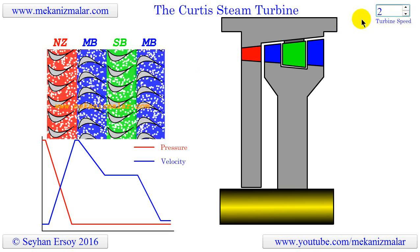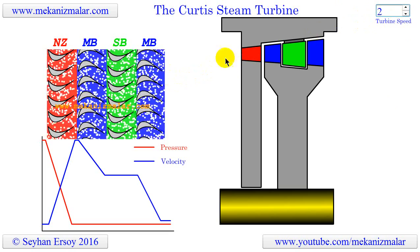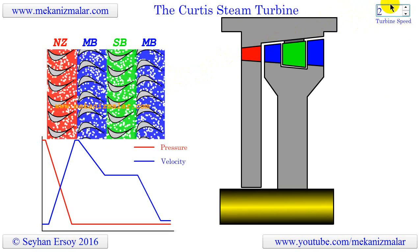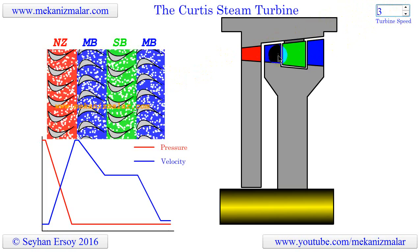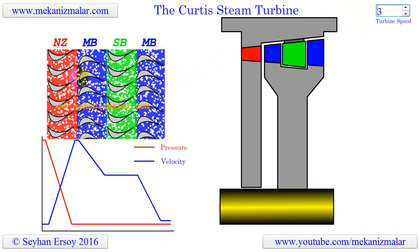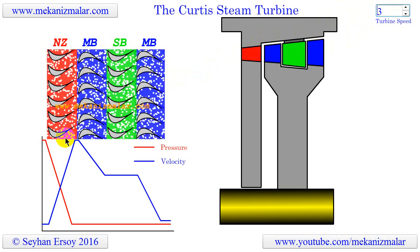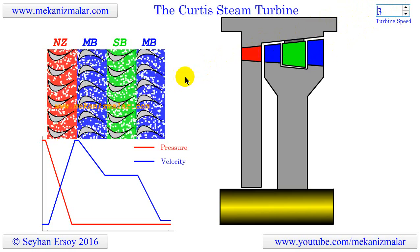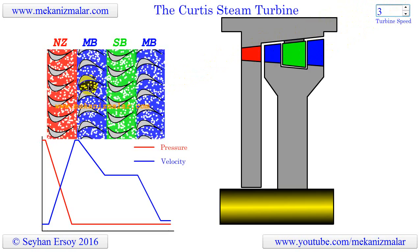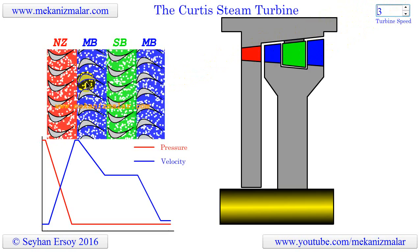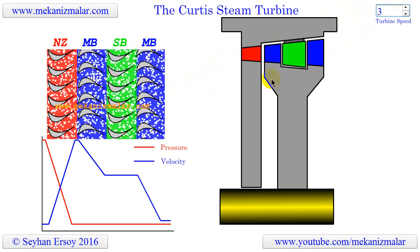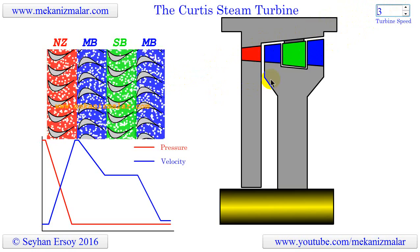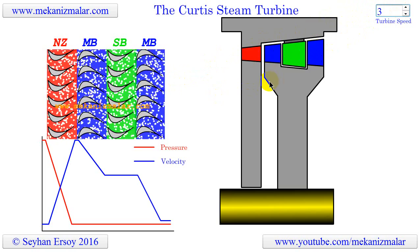In action type turbines, the potential energy of the steam is converted to kinetic energy in the nozzle. The high velocity steam leaving the nozzle strikes the rotating blades of the first stage of the turbine. That is where the 'action' refers to — this striking action of the steam on the blades.